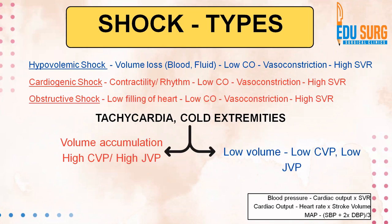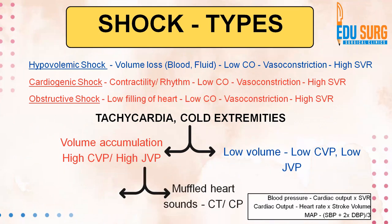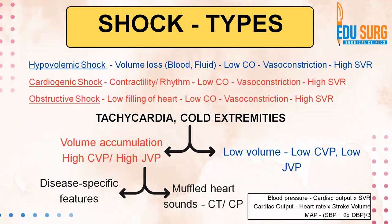Whereas in cardiogenic and obstructive shock, there is volume accumulation, so JVP will be high, or if you have measures of CVP, CVP will be high. Now, volume accumulation with muffled heart sounds is basically obstructive shock — this is the Beck's triad of obstructive shock. Muffled heart sound points you toward cardiac tamponade or constrictive pericarditis. In cardiogenic shock, you are looking at disease-specific features. So this is a very simple differentiation of hypovolemic versus cardiogenic and obstructive shock, and how you can differentiate them easily using your stethoscope.